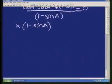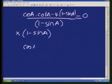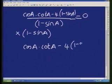I just lost my screen there, with cos a times cot a, minus 4 into 1 minus sine a, equals 0. Got rid of my fractions.